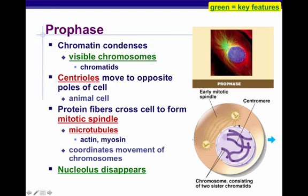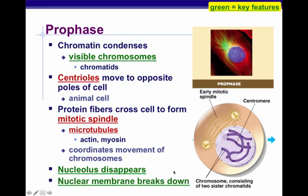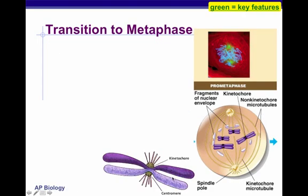The nucleolus — the lining around the nucleus — starts to disappear during prophase. In the following slides you'll see the white line around the nucleus disappear. The nuclear membrane also starts to break down, visible as fragments of the nuclear envelope.